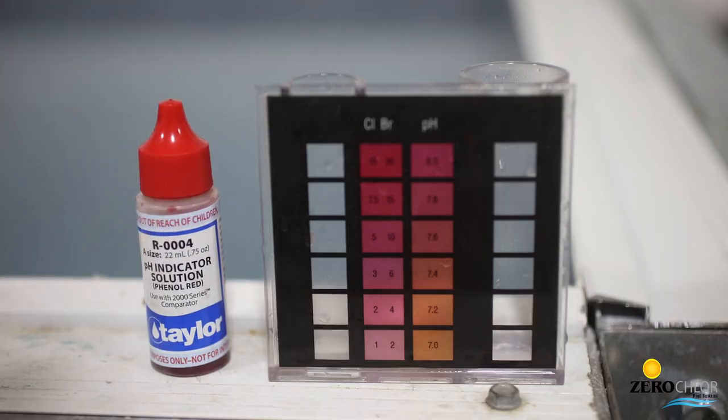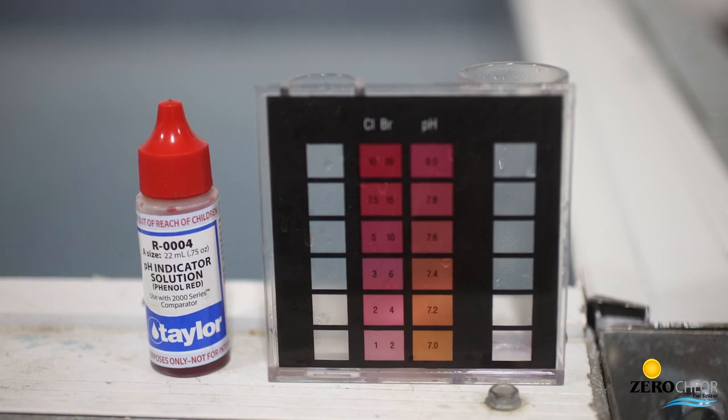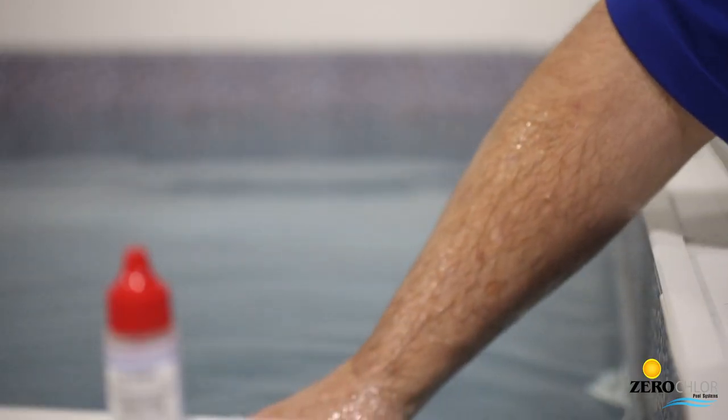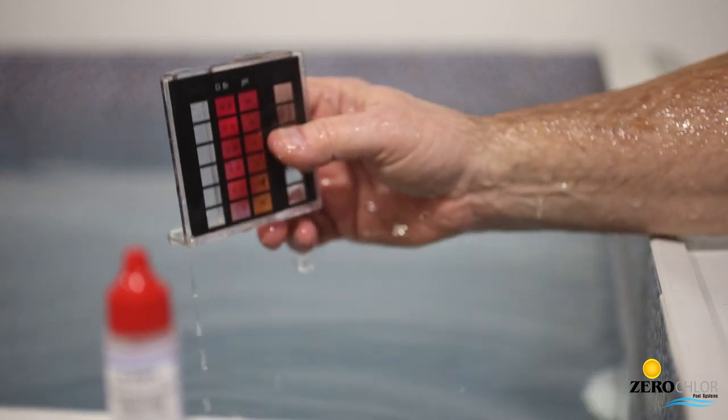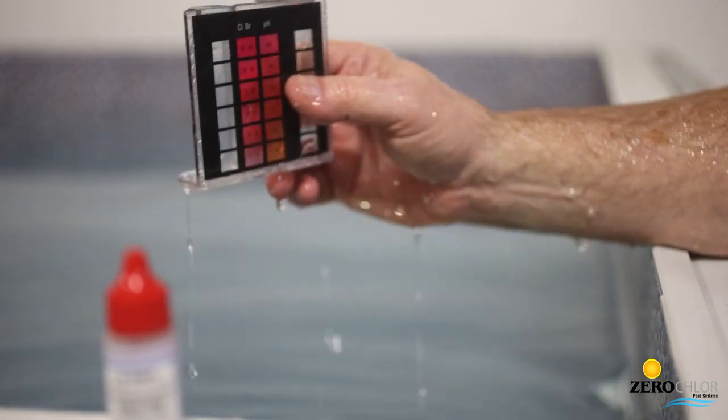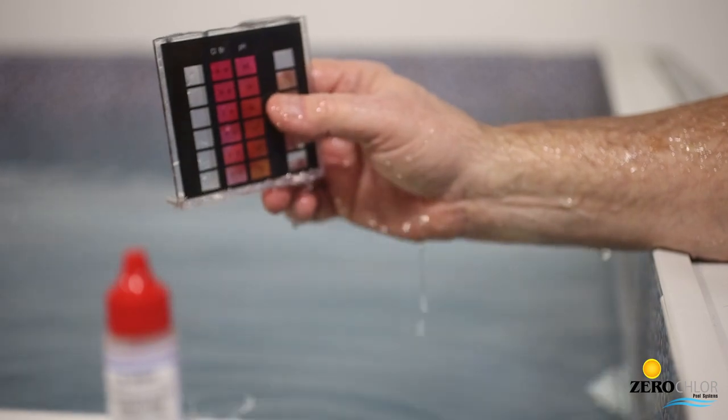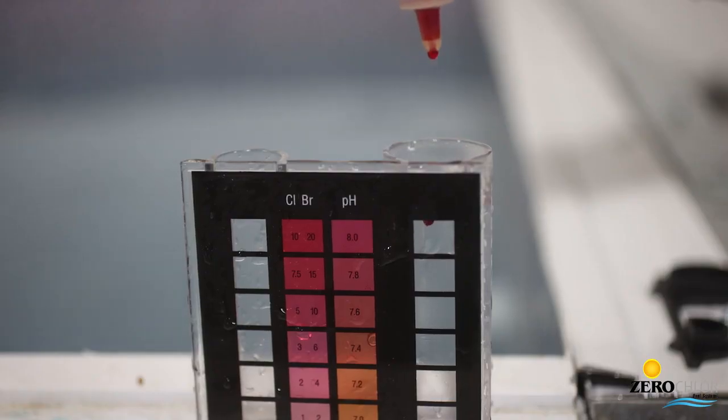When testing pH, potential hydrogen, always use a droplet test kit with a phenyl red reagent. Never use strips. If using the pH comparator that we provide, fill the sample tube to the top line, 44 milliliters. Rinse and retrieve a sample at elbow depth. Add five drops of phenyl red.